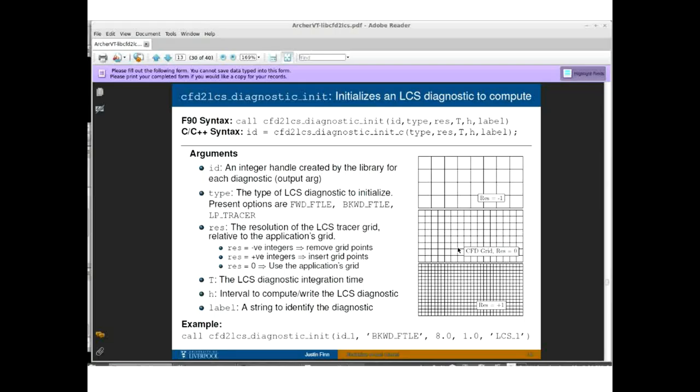The next argument is capital T, which is the LCS integration time. This would be the lifetime of the tracer particles that are used to compute the flow map. After that, we have little h, which is the interval at which we're going to compute or write the LCS diagnostic. You can think about this as perhaps your animation interval. And finally, we're going to pass a string called label, which just gives us a human readable way to identify each LCS diagnostic. Here is an example. I'm going to create this diagnostic and I'm going to store the identifier in ID1. It's going to be of type backward FTLE. The integration time will be eight seconds. And I will write the FTLE field every one second. And I'll call this LCS1.